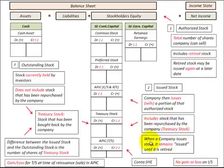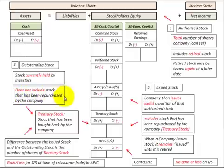When the company issues the stock, it remains issued until it's retired. Now our outstanding stock is the stock that's currently held by the investors. That does not include the stock that has been repurchased by the company — that would be our Treasury stock. So our outstanding stock does not include our Treasury stock.